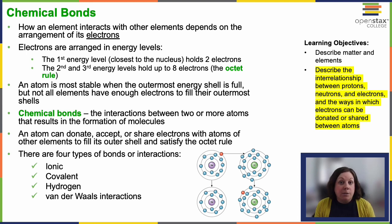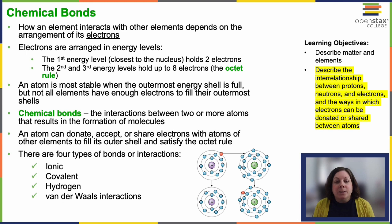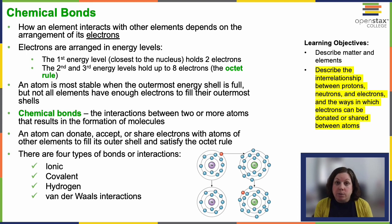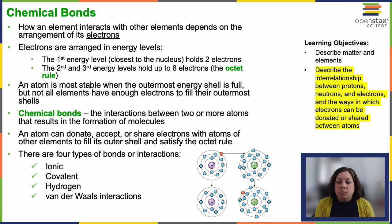Not all elements have enough electrons to fill their outermost shells, and those elements want to interact with other elements to bring themselves up to that eight count. This is where we get chemical bonds. A bond is just an interaction between two or more atoms that results in the formation of molecules — multiple atoms bonded together. An atom can donate, accept, or share electrons with other elements until it fills its outermost shell, satisfying the octet rule, and making that molecule stable.